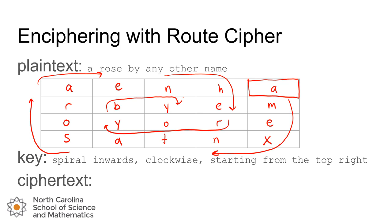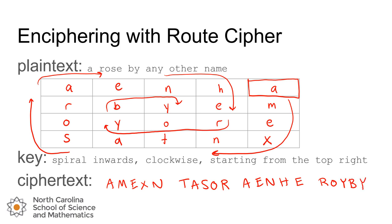It should give us a, m, e, x, n and so on. And now we have our cipher text message. You can see again this is another transposition cipher — none of the letters have changed, just their positions.